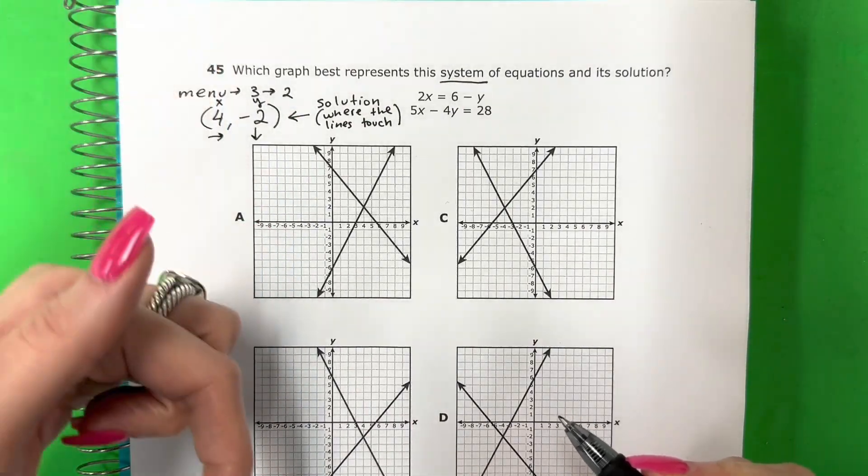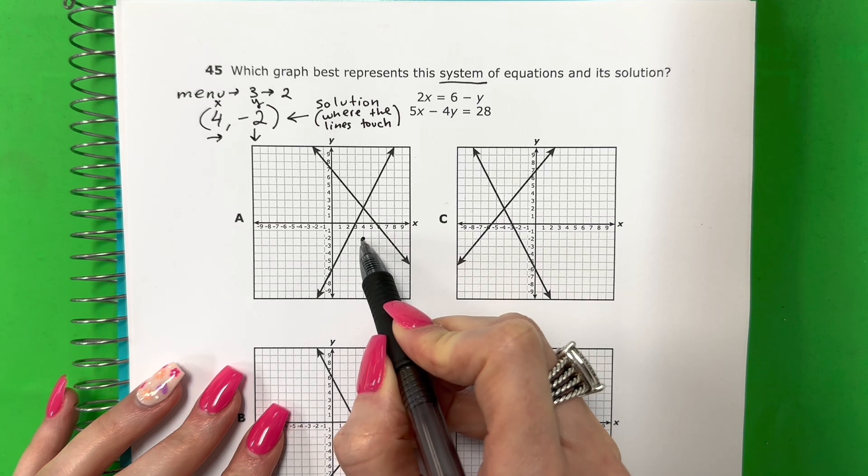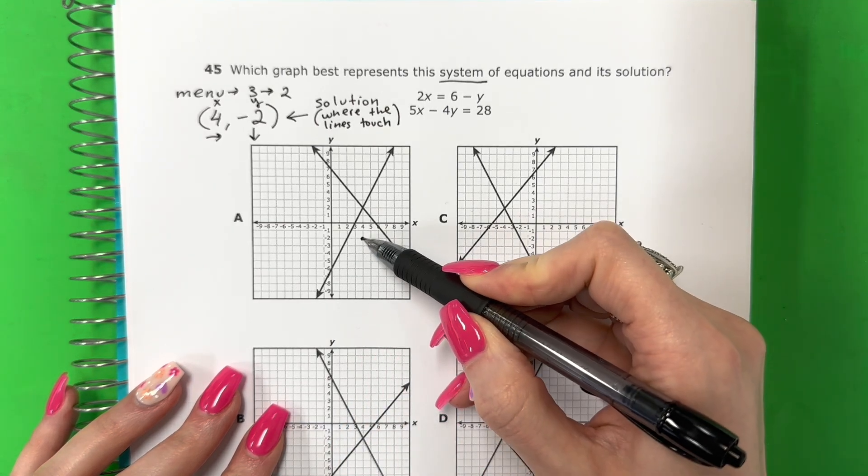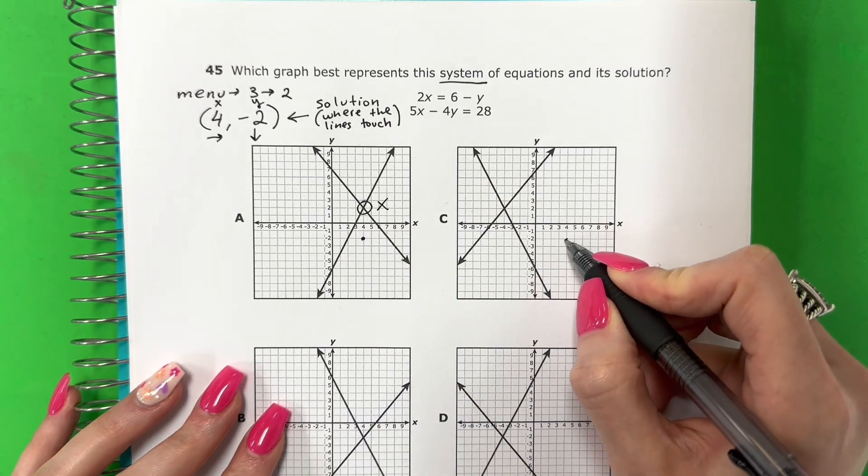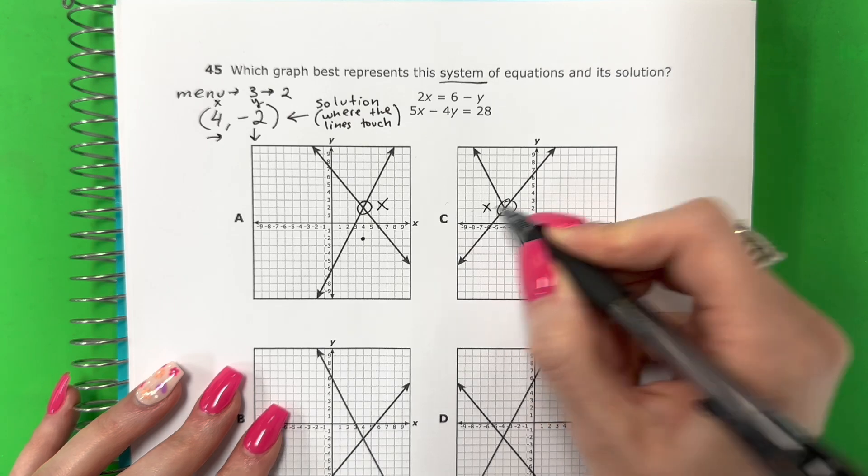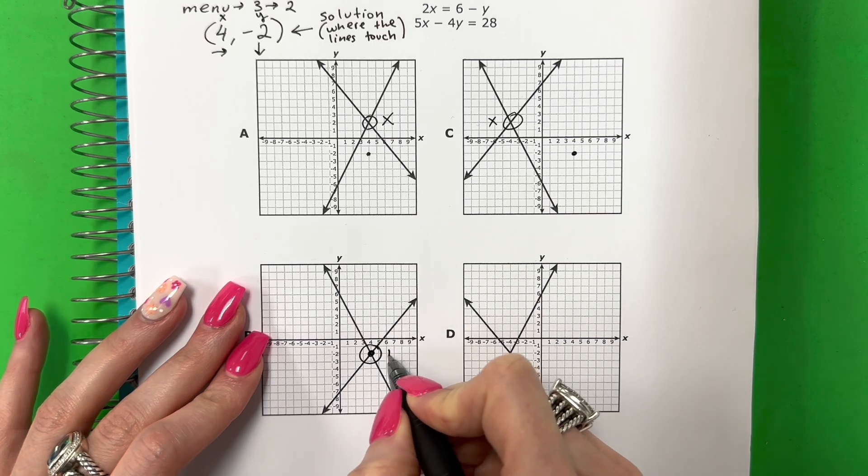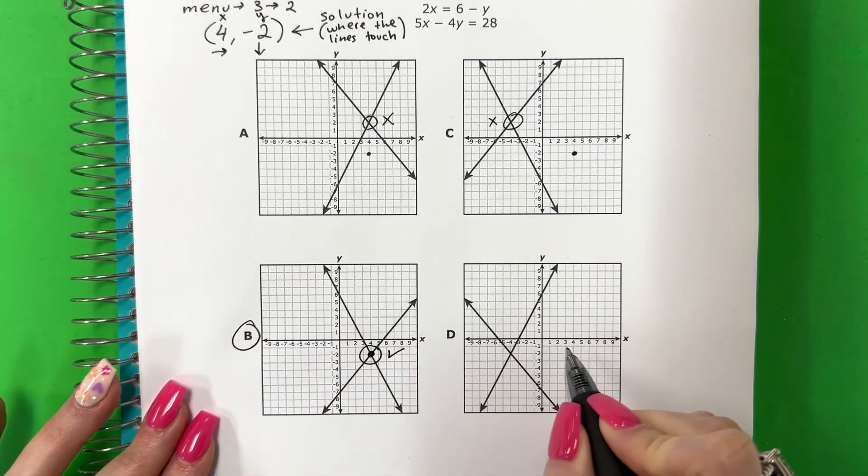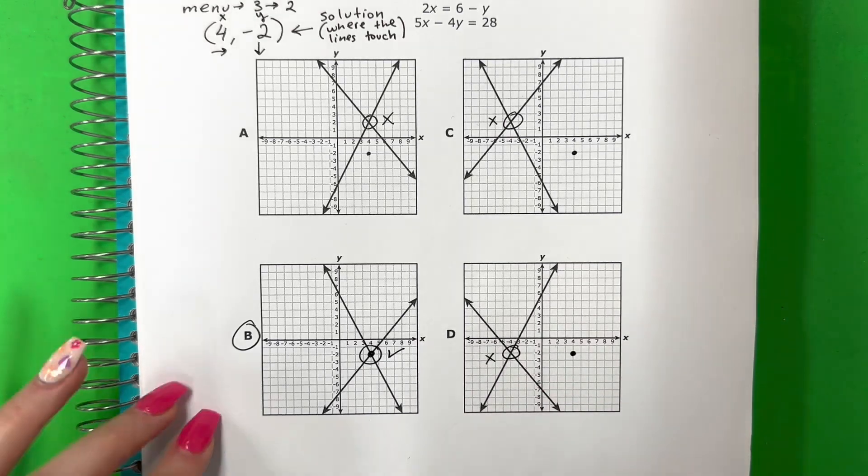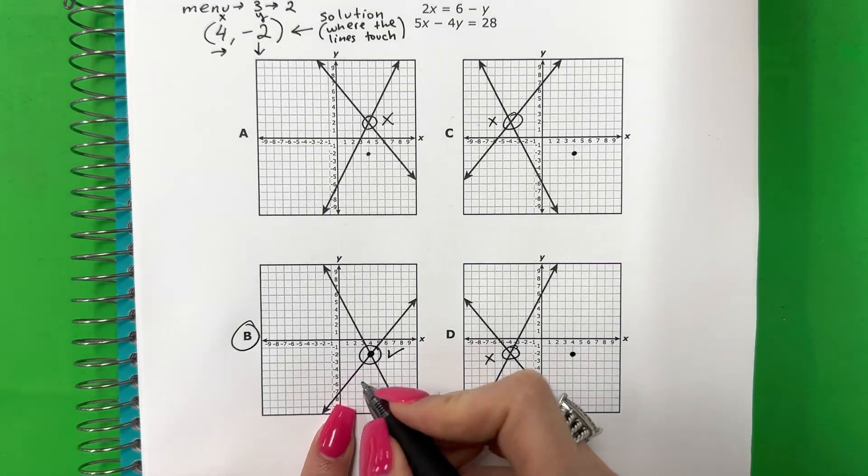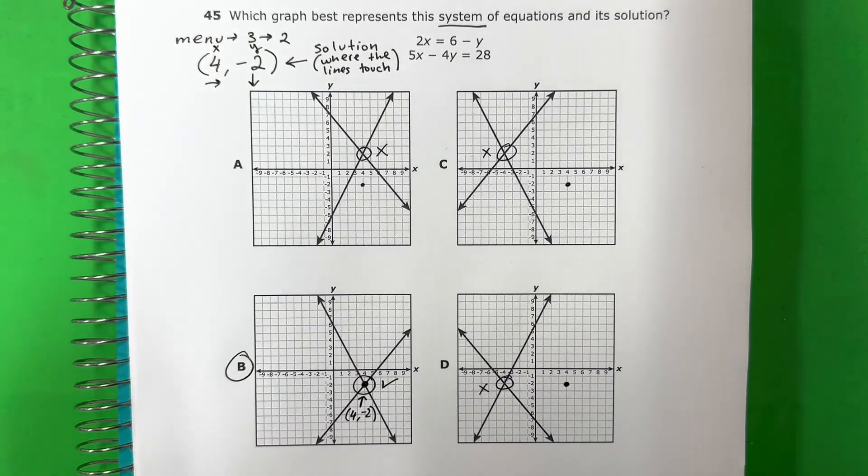So I need 4, 2. So 4 to the right. Cuatro a la derecha. And 2 down. Y dos abajo. This is where the two lines touch. Este es donde las dos líneas se tocan. Which is not, this is not correct. So this is no. So 4, negative 2. Nope. This is not correct. 4, negative 2. This is it. This is my answer. Let's just look here. 4, negative 2. So that is not correct. So you want 4, negative 2. Which is right over here. That is the solution.